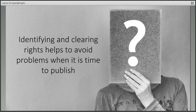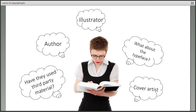Identifying and clearing rights of third party material throughout their research will save researchers a lot of problems when it comes time to publish or share their work. One of the best ways for researchers to manage these potentially complex rights issues is to carry out a copyright audit throughout their project.